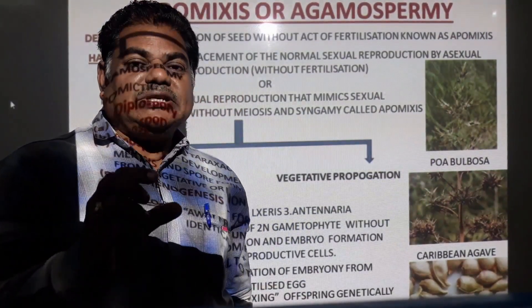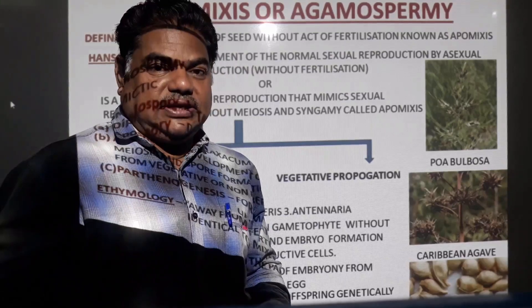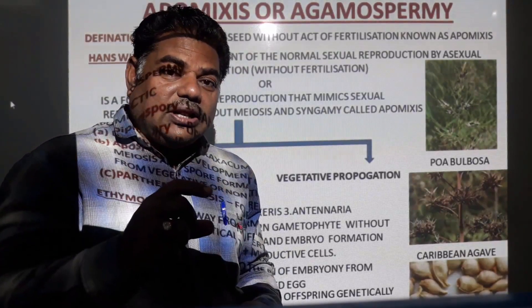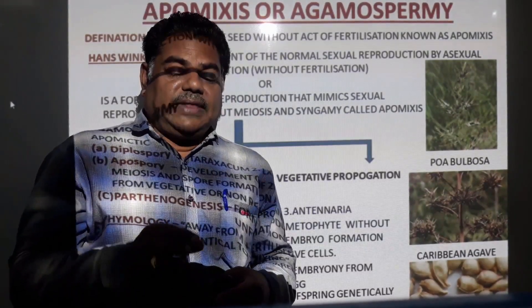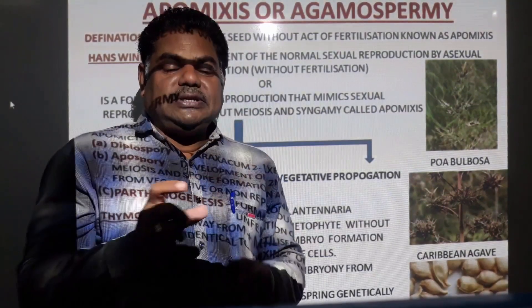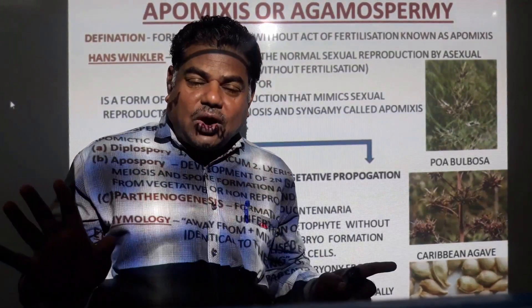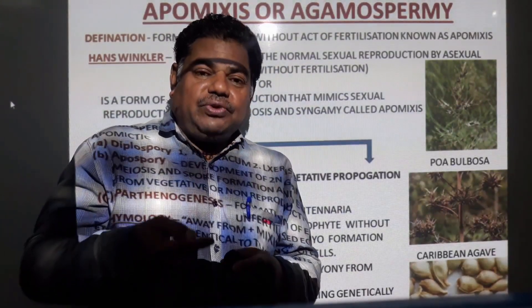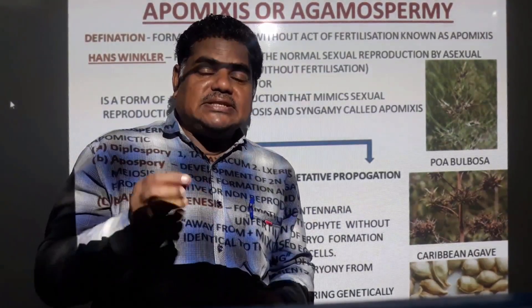As per rule, seed and fruit formation take place after fertilization. After fertilization, the ovule converts into a seed, and the ovary wall converts into a fruit wall. But in the case of Apomyxis, formation of seed from the ovule takes place without the act of fertilization.